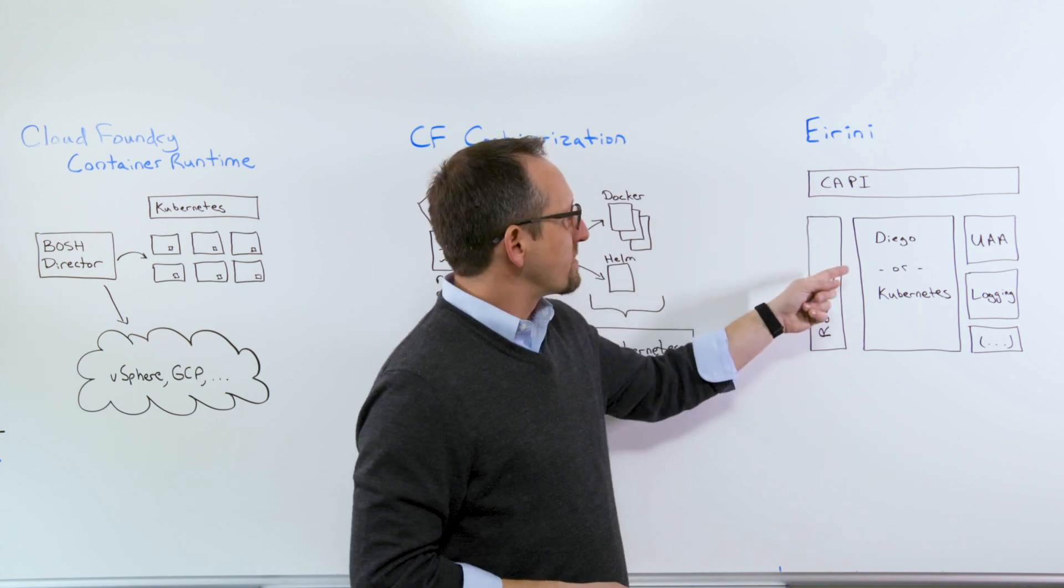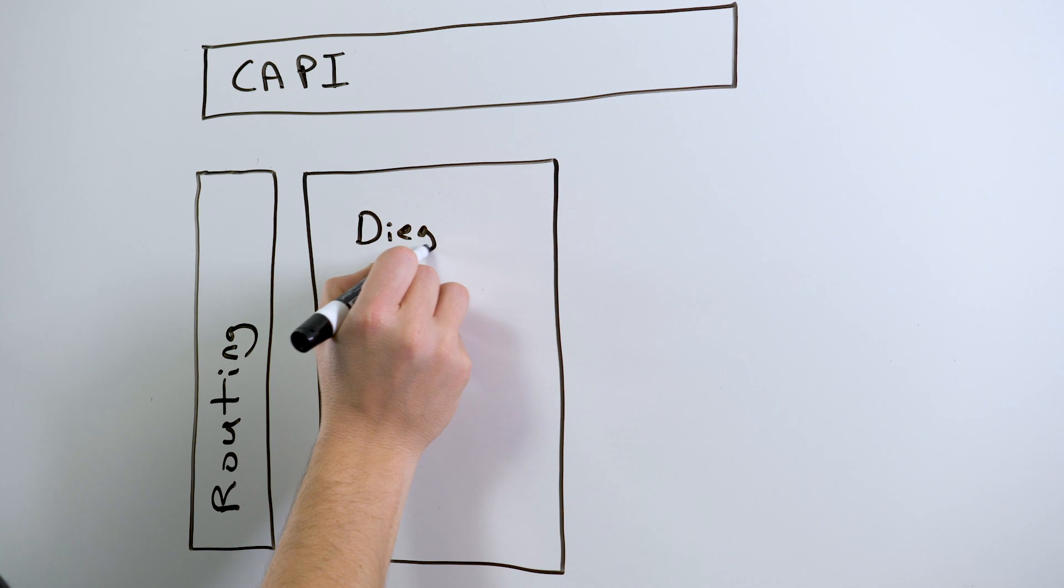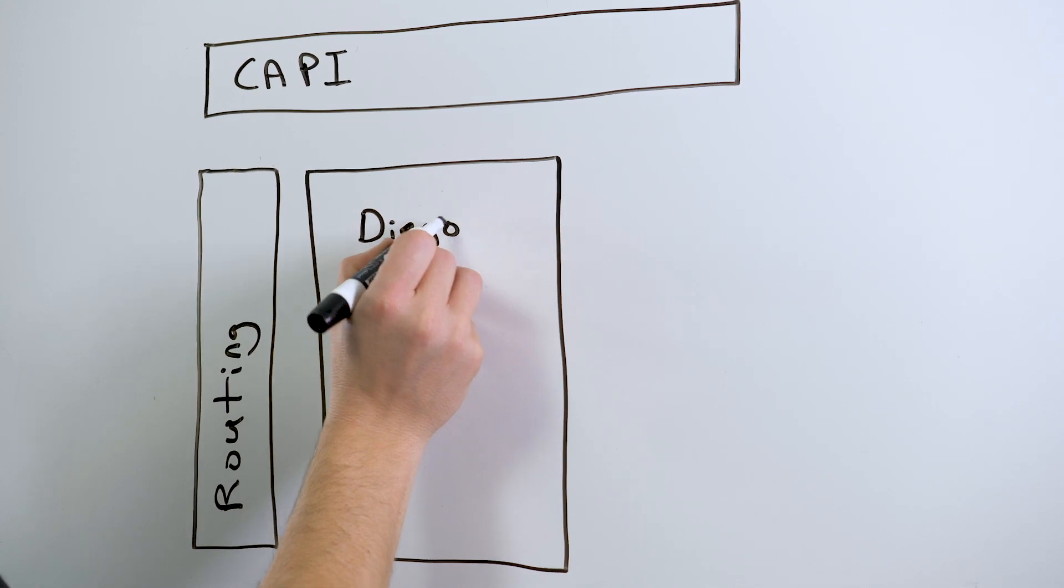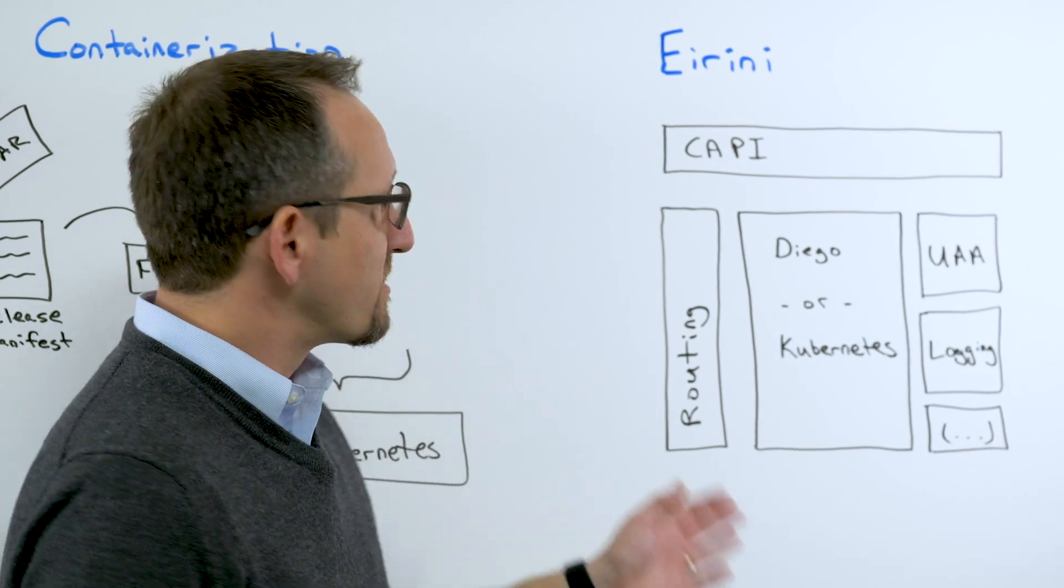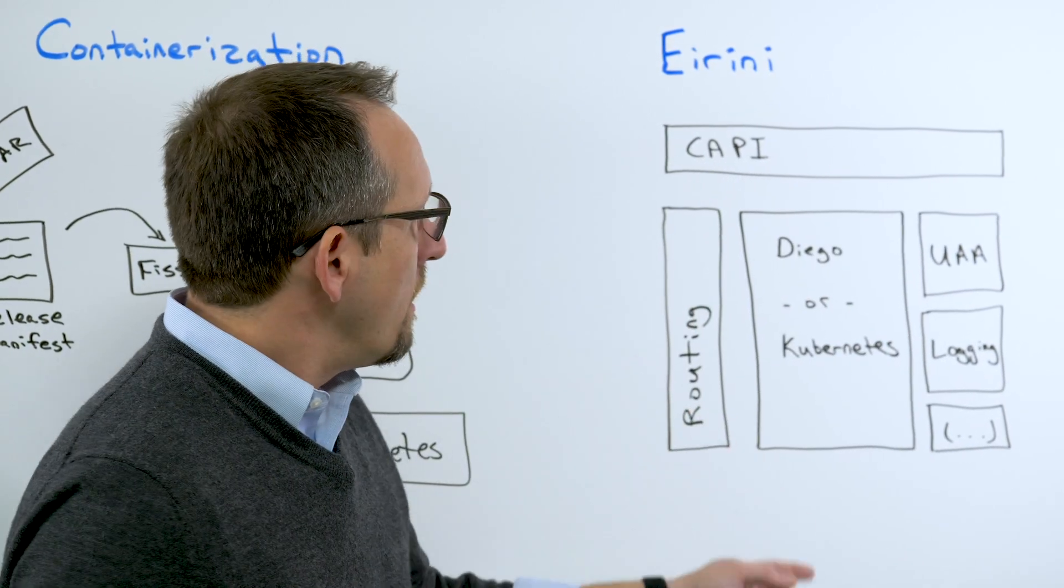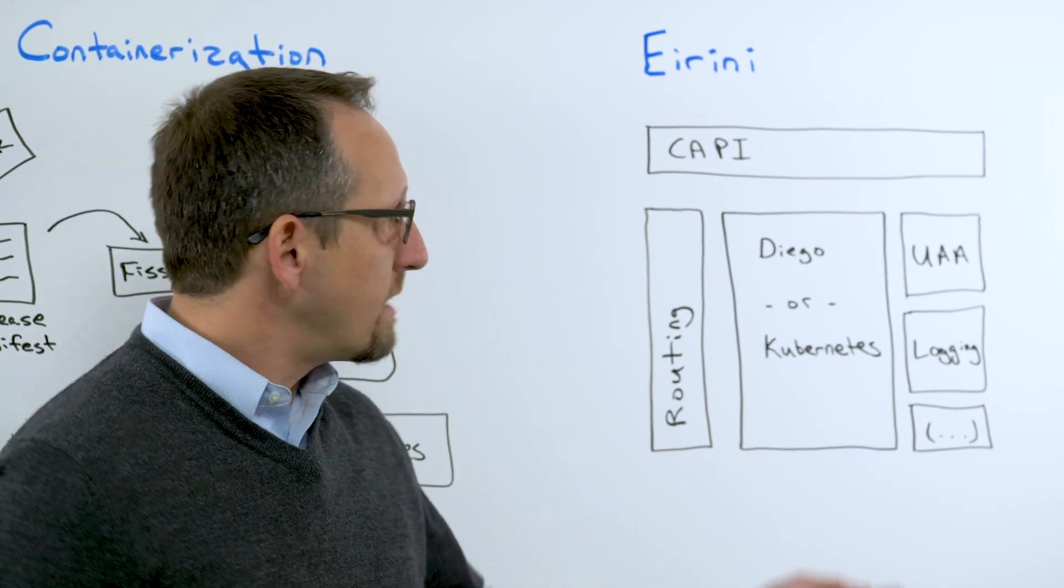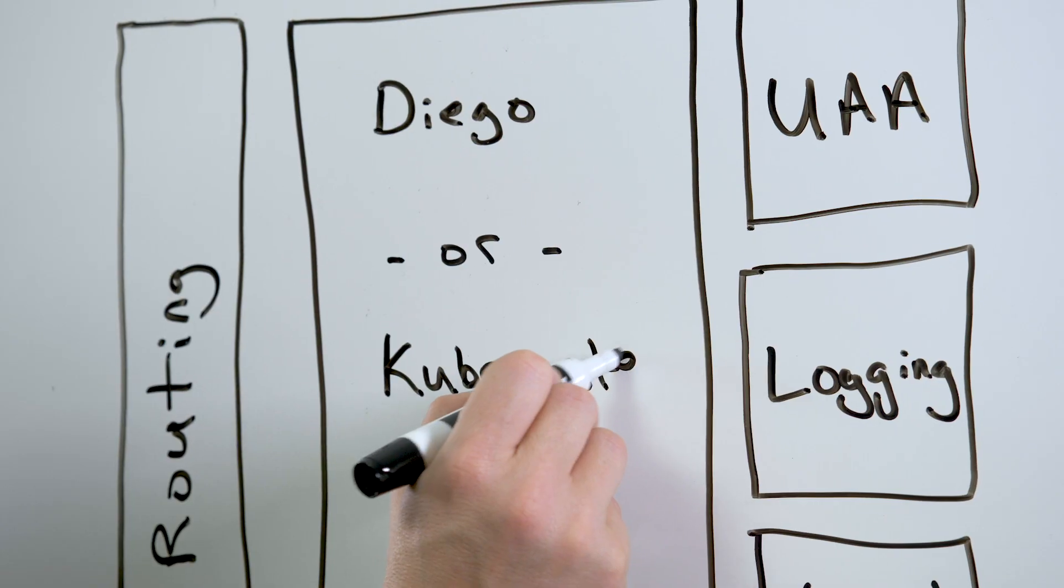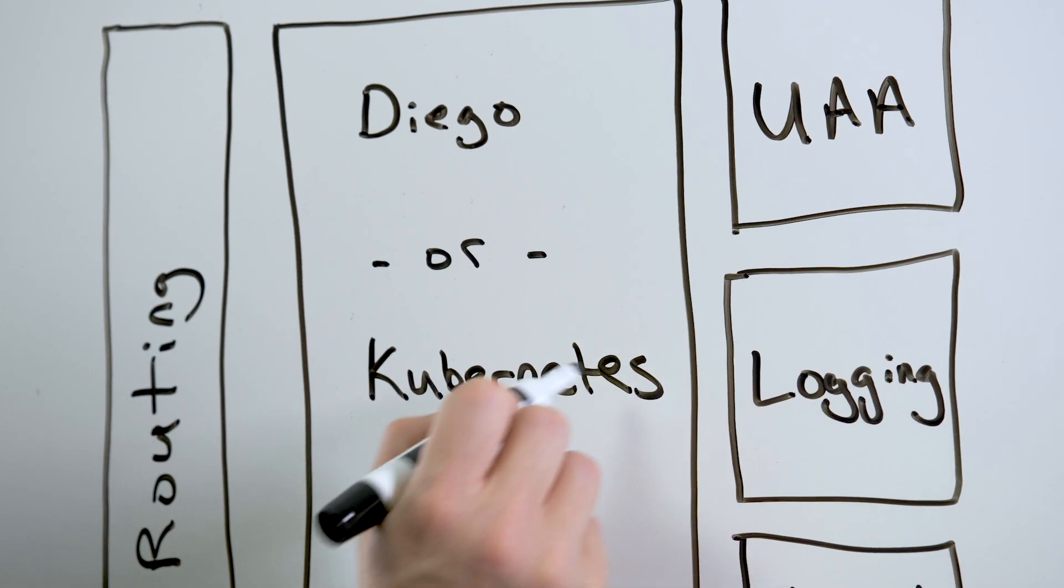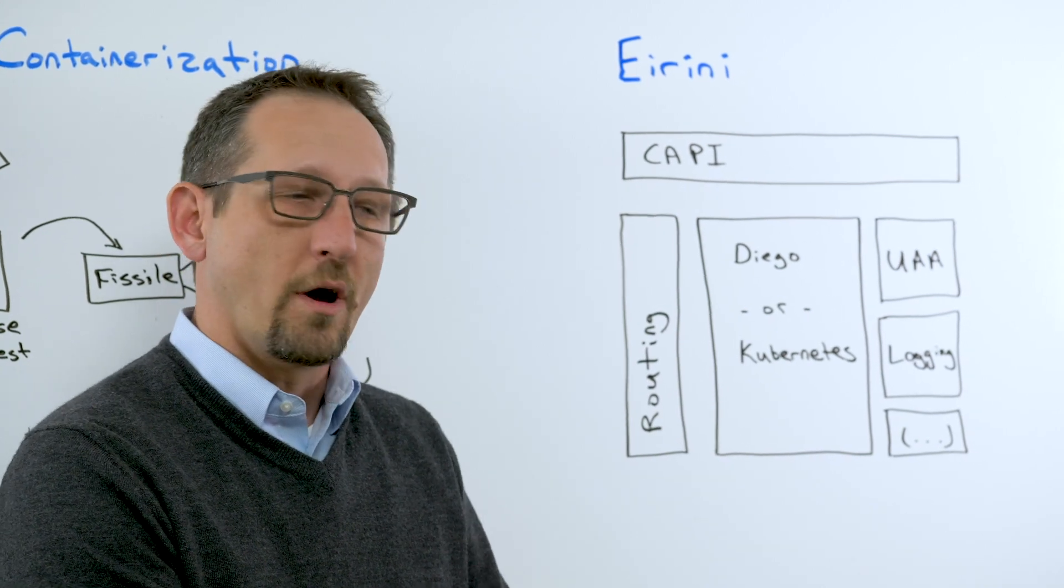Now what the Eirini project is focused on doing is providing an option for the Diego container scheduler. Diego container scheduler is one that was built by our community, purpose-built to support the app runtime. But Kubernetes has reached the point of maturity where there are some use cases it can solve. And Eirini is all about giving us choice between Diego and Kubernetes as the underlying infrastructure that the app containers are run on.